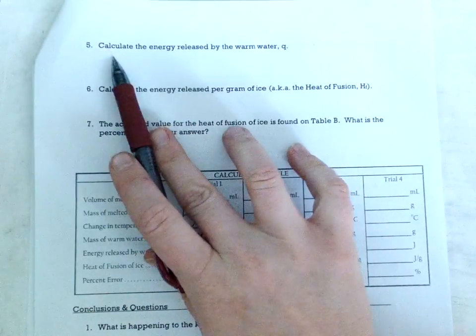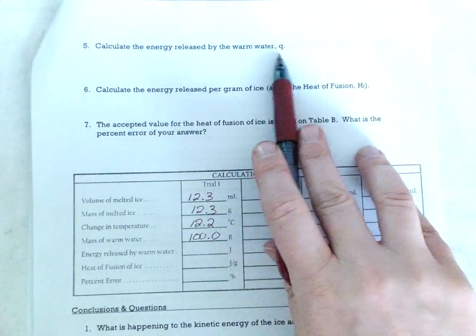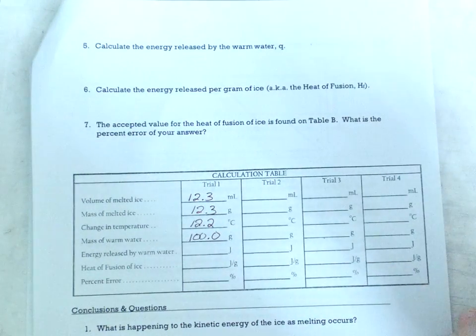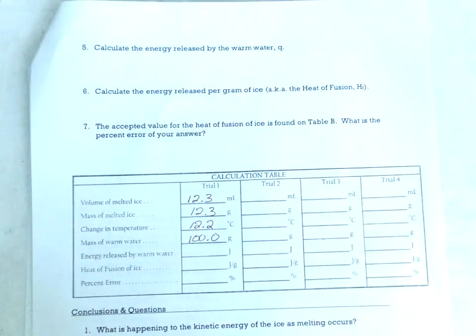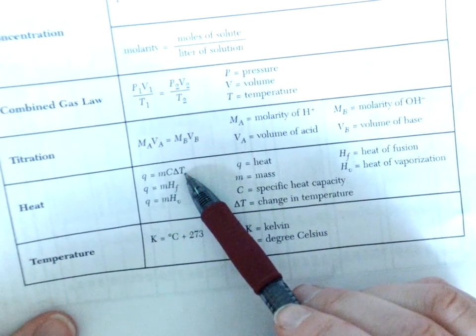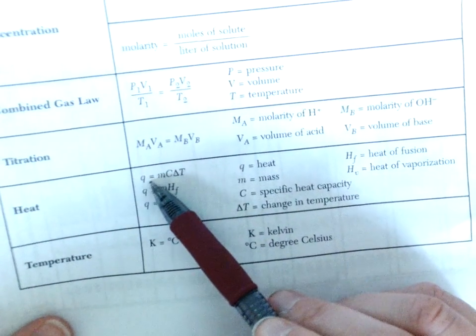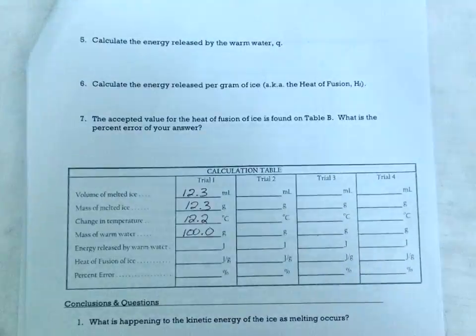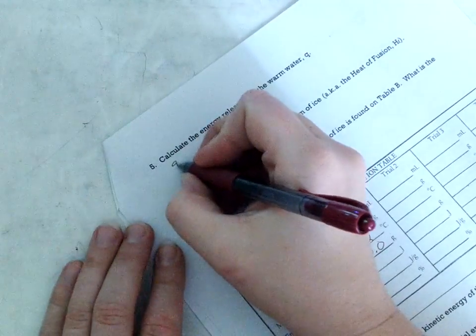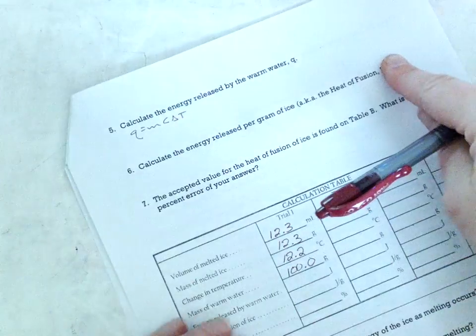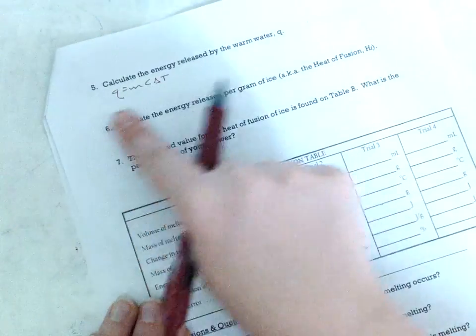Okay. Now we're to calculation five. Energy released by warm water. Here it is. Calculate the energy released by the warm water which will be Q. Now the water cools down in temperature. So of course I'm going to use Q equals MCAT because that's the heat equation with the temperature change. And I'm going to make sure everything I put in here is for the warm water because that's what they asked me for in calculation five. Now leave some room so you can do this set up four times.